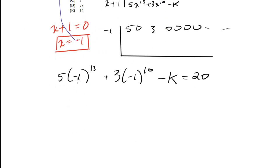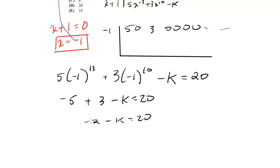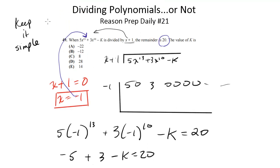So let's go ahead and solve this. Negative 1 to the 13th will be just negative 1. This will just be positive 1. So this is negative 2 minus k is equal to 20. And now we're going to add 2 to both sides. Get negative k equals 22. So k equals negative 22. And that would be choice A.